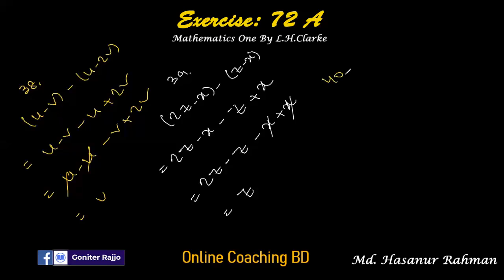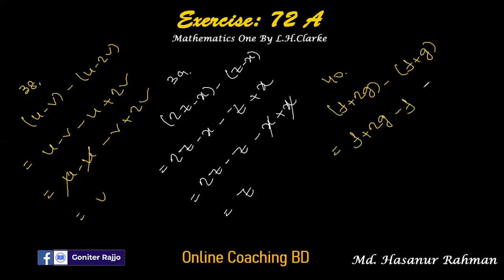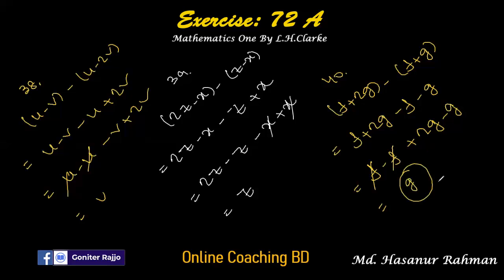Number forty: f plus 2g minus (f plus g). Expanding: minus into f is minus f, minus into g is minus g. So f minus f cancels; 2g minus g is g. The answer is g. And that's all for exercise 72a — thank you very much for watching, see you soon in the next video. Allah hafiz.